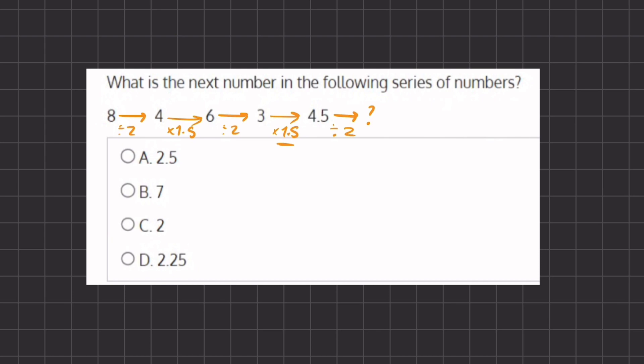And if we divide 4.5 divided by 2, we should get 2.25, which corresponds with answer D. So our next number in our series will be 2.25 because that is half of 4.5.